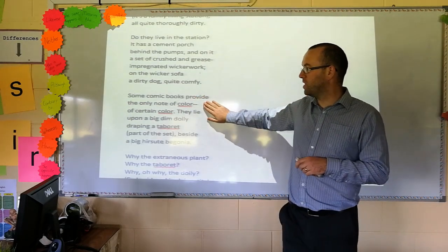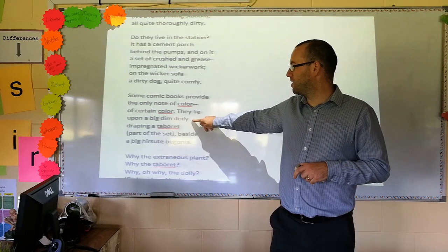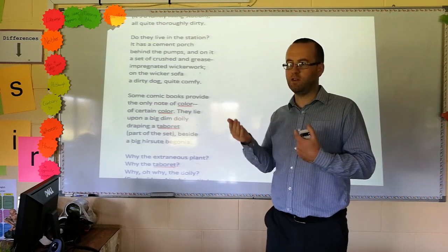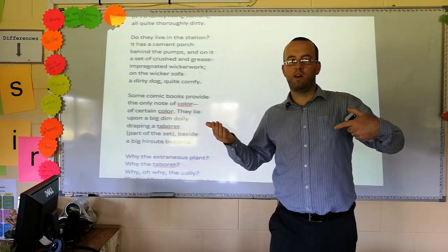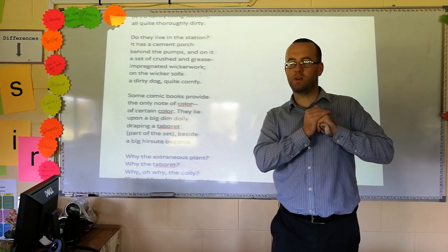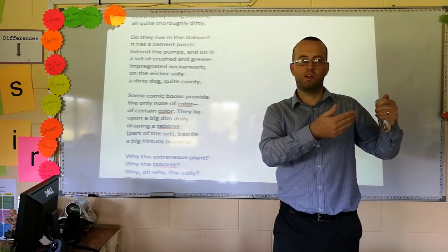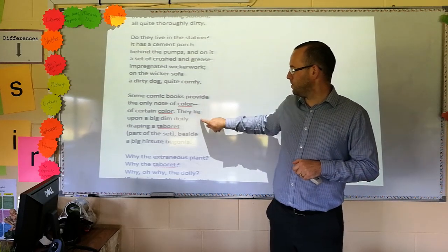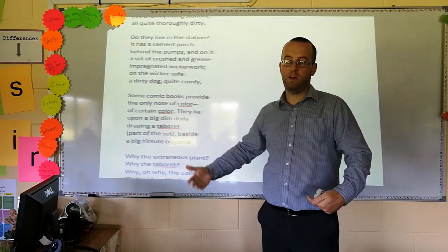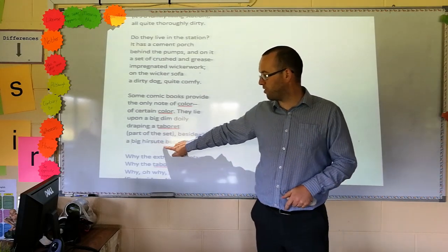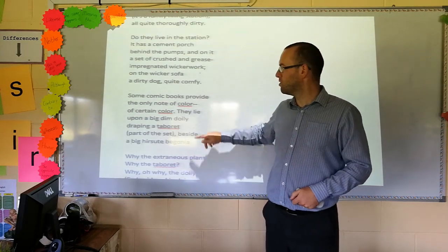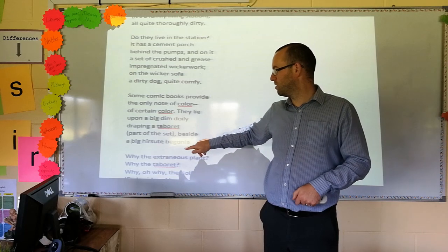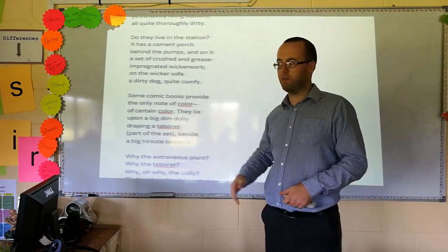Next verse. Some comic books provide the only note of colour. A certain colour. They lie upon a big, dim doily draping a tabaret. A doily is one of those kind of nice little, sometimes knitted, sometimes crocheted, a little piece of material that maybe your granny or a relative might put a pot plant or something on it, maybe on the mantelpiece in the kitchen, in the sitting room, maybe with a little ornament or something on top. But it's a really delicate thing. And these are draping a tabaret part of the set. A tabaret is a fancy bit of furniture, basically. Beside a big hirsute, hairy begonia. Begonia is a flower. So she's noticing some strange details here. These details don't fit. You don't find doilies in petrol stations. You don't find plants, flowers or tabarets. They're out of place.